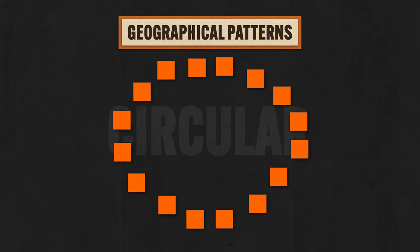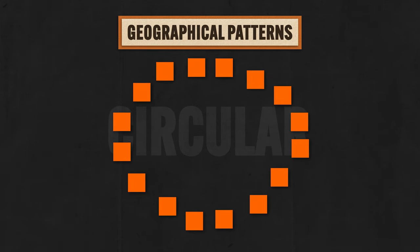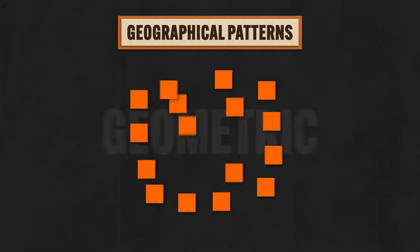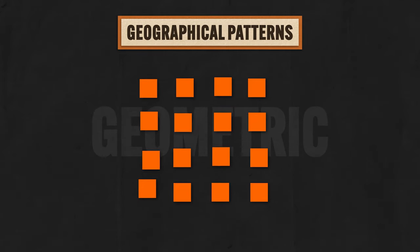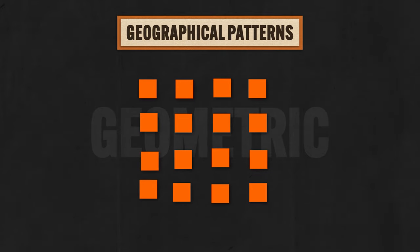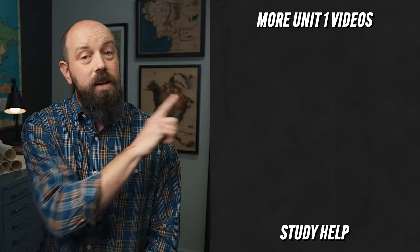Fifth, circular patterns, like you might see in parts of Germany where houses were built around a central communal space. And sixth, geometric patterns, in which phenomena appear in a regular, orderly fashion — like the square and rectangle farm plots in the Midwest United States.